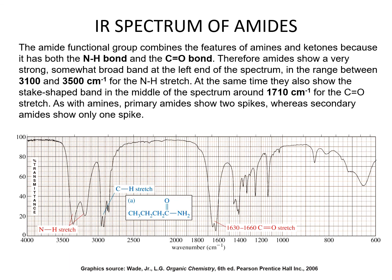The amide functional group combines the features of amines and ketones because it has both the N-H bond and the C=O bond. Therefore, amides show a very strong, somewhat broad band in the range between 3100 and 3500 centimeters to the minus one for the N-H stretch, and also a stake-shaped band around 1710 centimeters to the minus one for the C=O stretch. As with amines, primary amides show two spikes while secondary amides show only one. The C-H stretches appear around 3000, and the C=O stretch is represented around 1630 centimeters to the minus one. This compound corresponds to butyramide.